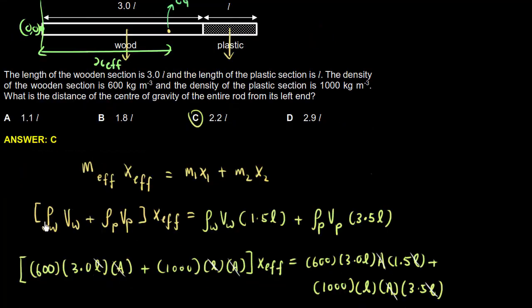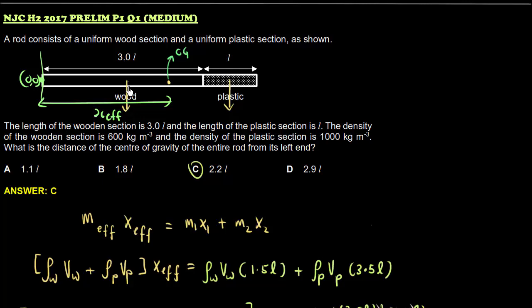Now, mass, total mass is what? It's density times volume of the wood plus density times volume of the plastic times, this is an X-effective, which is an effective CG we want to find. M1 is the mass of the wood, density times volume. X1 is the CG of the wood to this reference 0. In this case, it must be 1.5L.